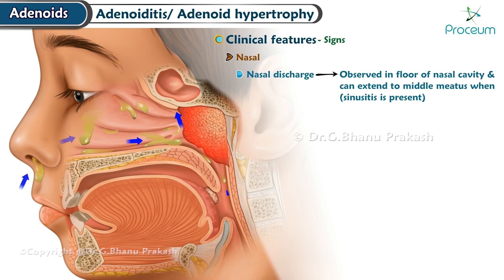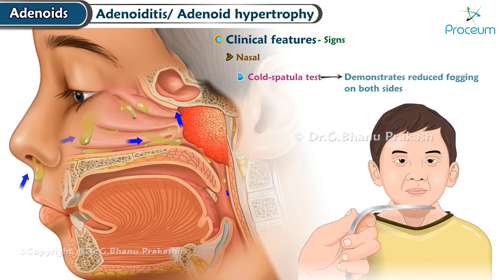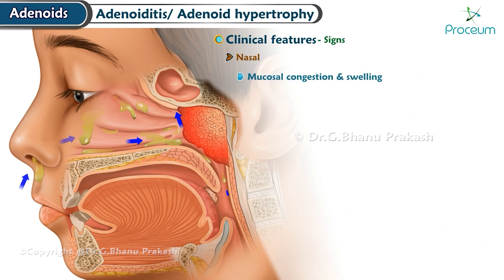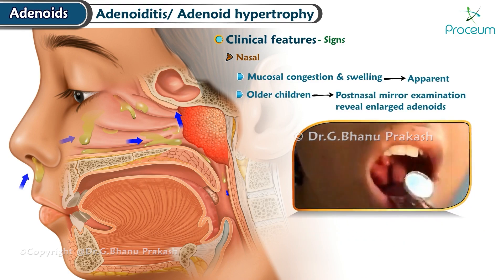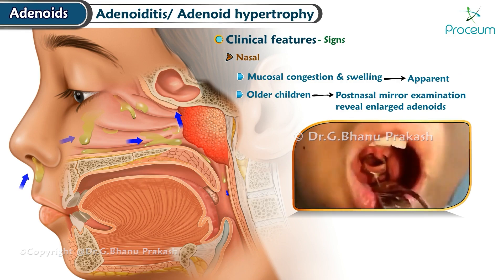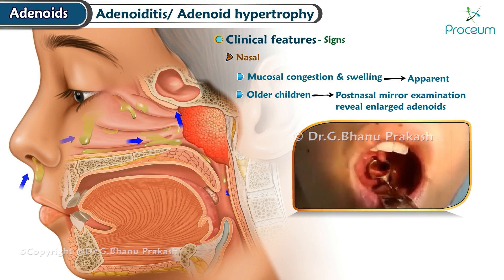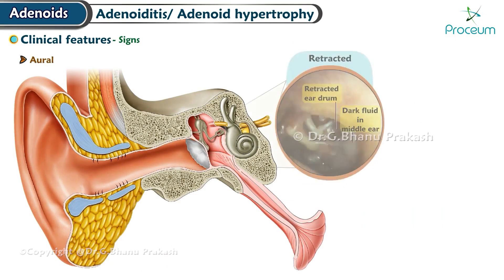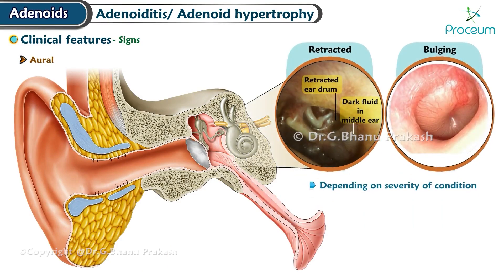Signs — nasal: Nasal discharge is observed on the floor of the nasal cavity and can extend to the middle meatus when sinusitis is present. The cold spatula test demonstrates reduced fogging on both sides. Mucosal congestion and swelling may be apparent. In older children, a post-nasal mirror examination may reveal enlarged adenoids.